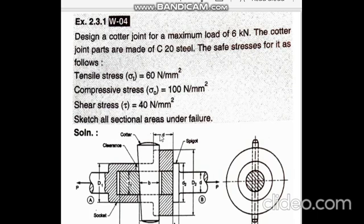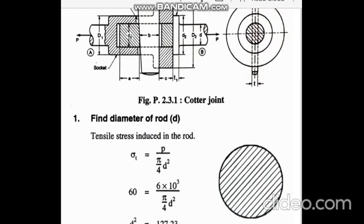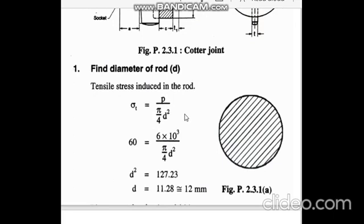They are specifically asking you to sketch all sectional areas under failure. People who do not draw the areas will lose marks. You are expected to draw a line diagram — it is not necessary to use a pencil and draw to scale. With a pen you draw a rough figure; you should be able to finish it in about one minute. First, we find the diameter of the rod. Area is pi by 4 d square. Sigma t is load upon area: 60 equals 6000 upon (pi/4 d squared).